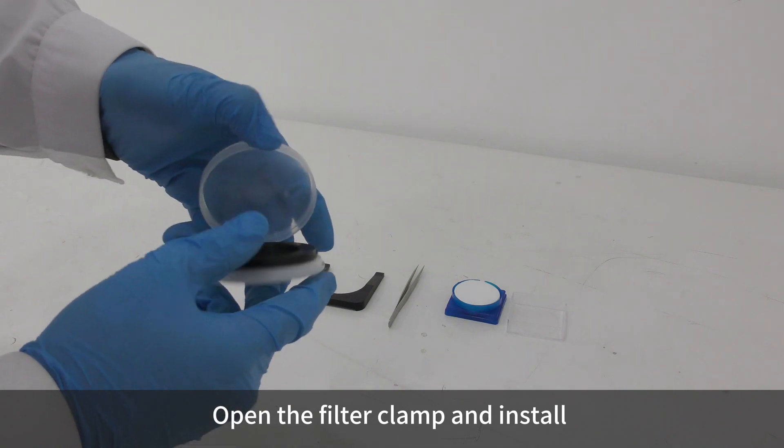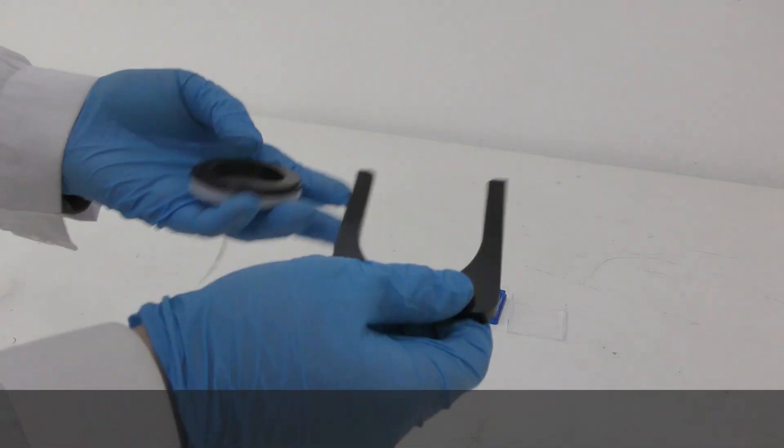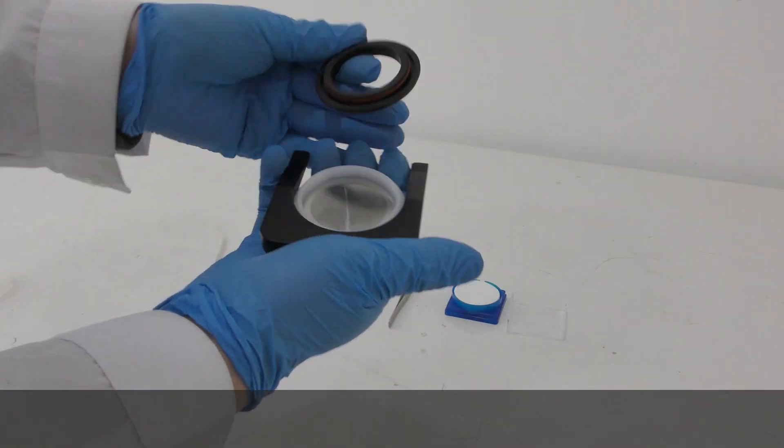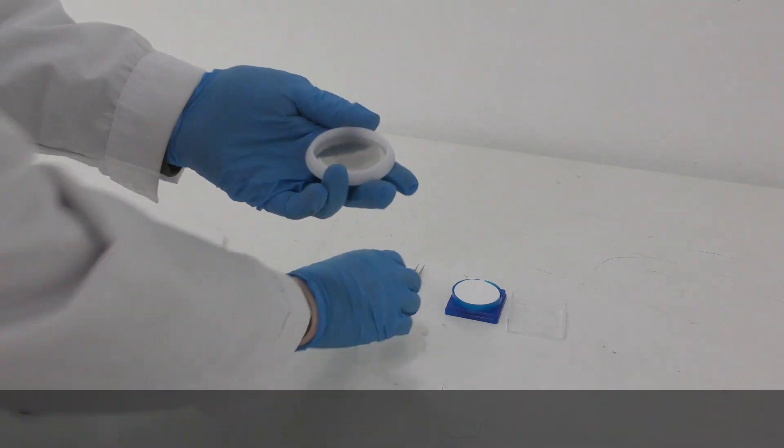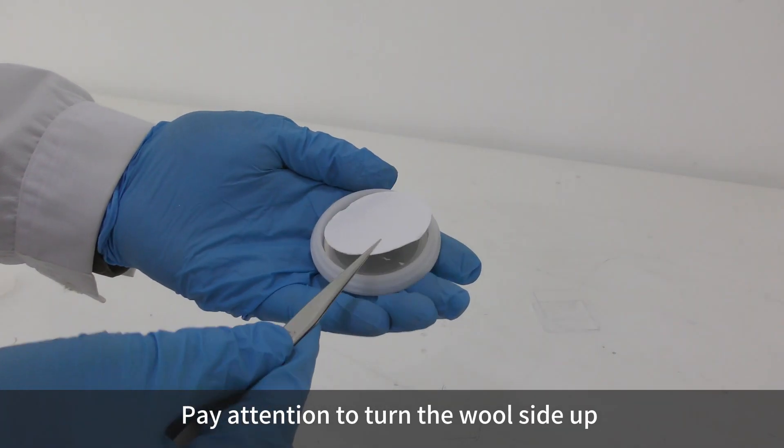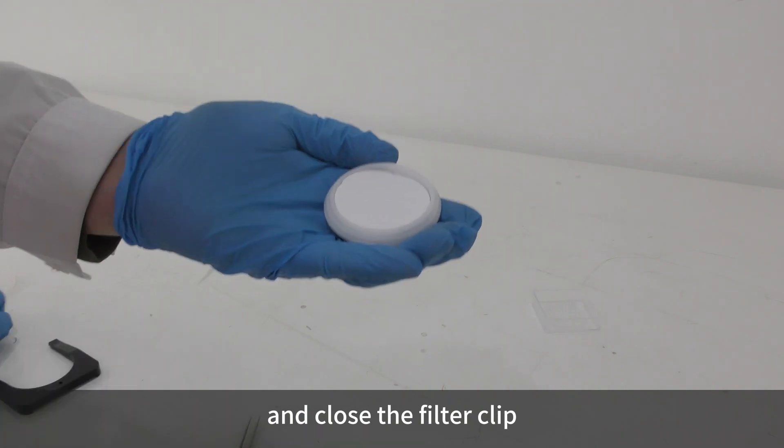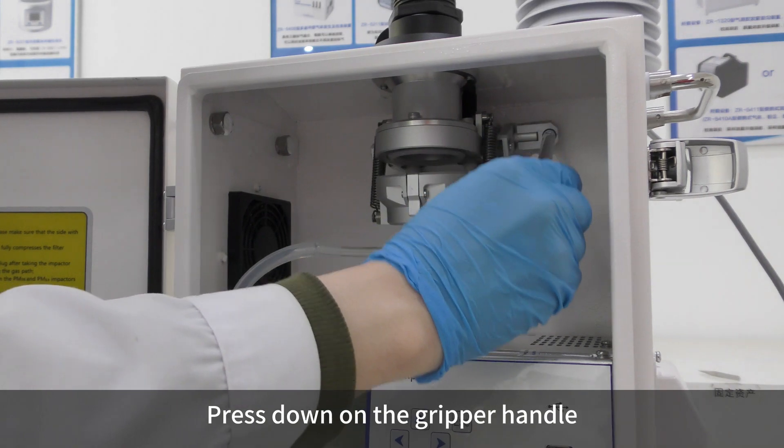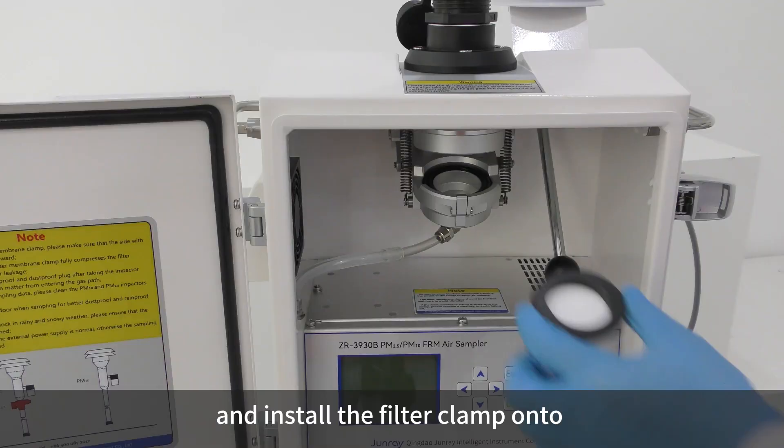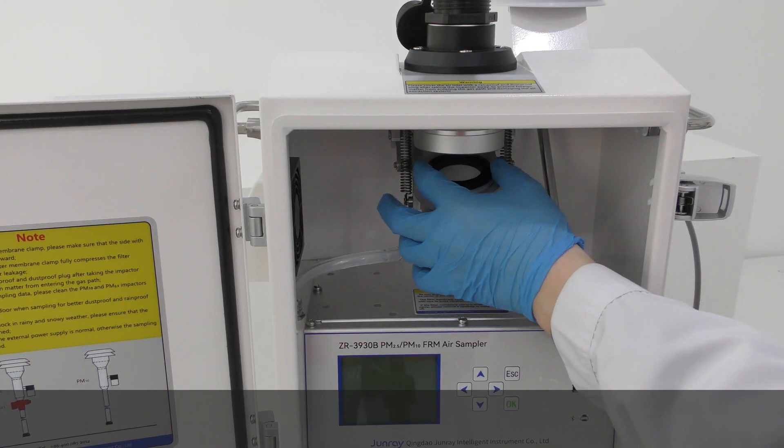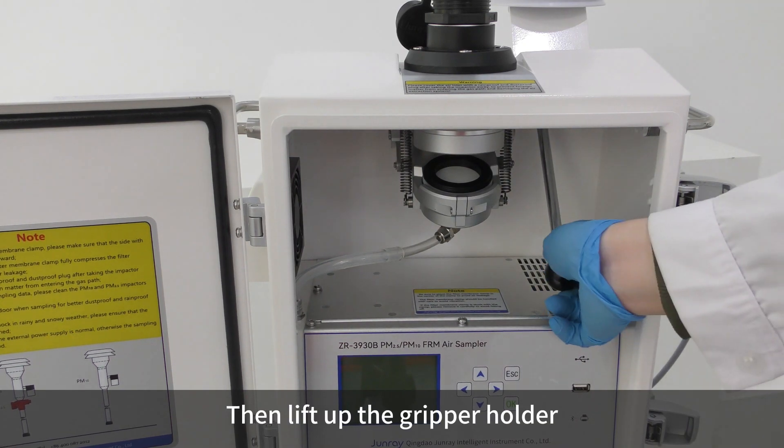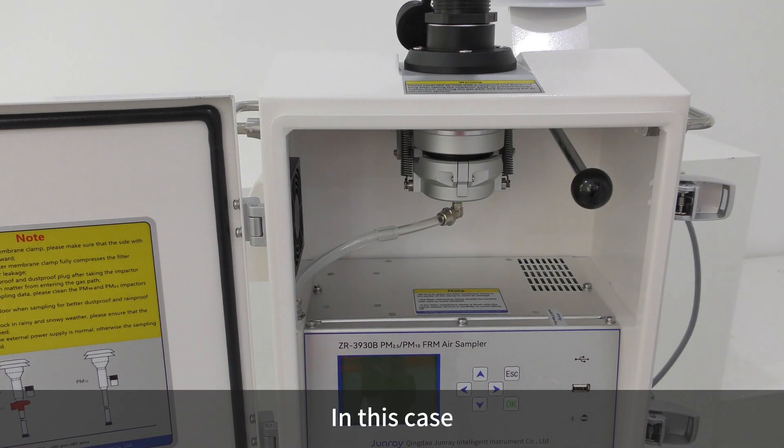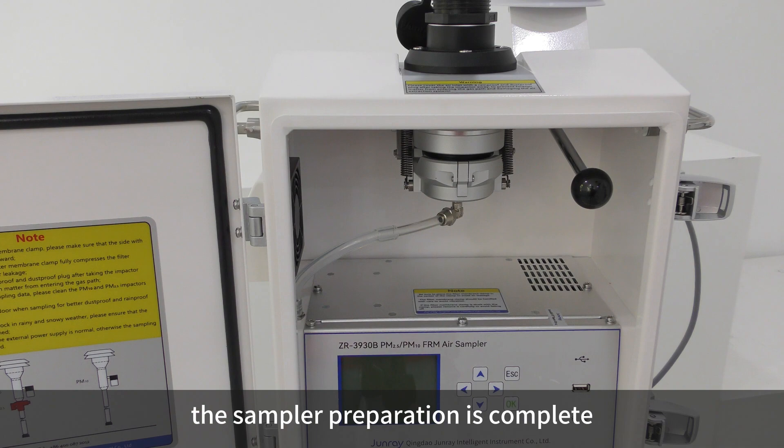Open the filter clamp and install the filter onto the mesh holder. Pay attention to turn the wall side up and close the filter clip. Press down on the gripper handle and install the filter clamp onto the filter membrane holder. Then lift up the gripper holder. The sampler preparation is complete.